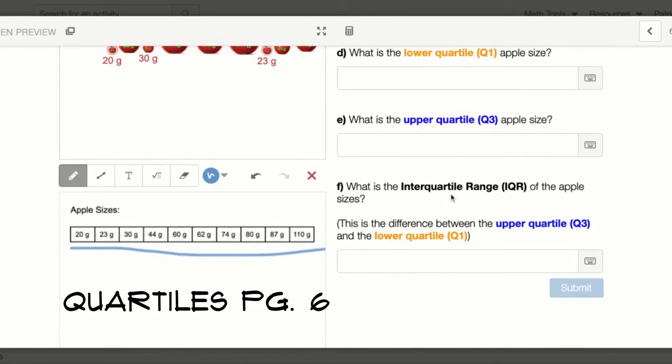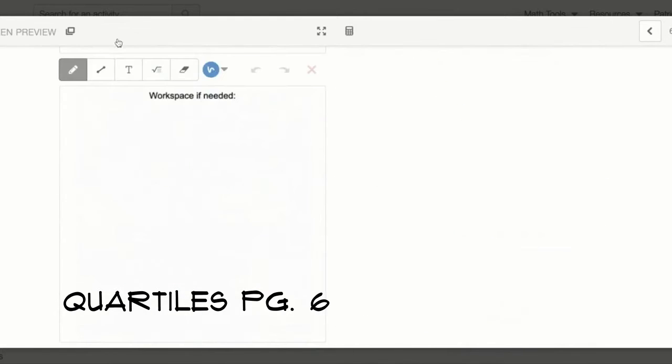Letter F: What is the interquartile range IQR of the apple sizes? This is the difference between the upper quartile Q3 and the lower quartile Q1. Remember difference is subtraction. And that is the end of page 6.